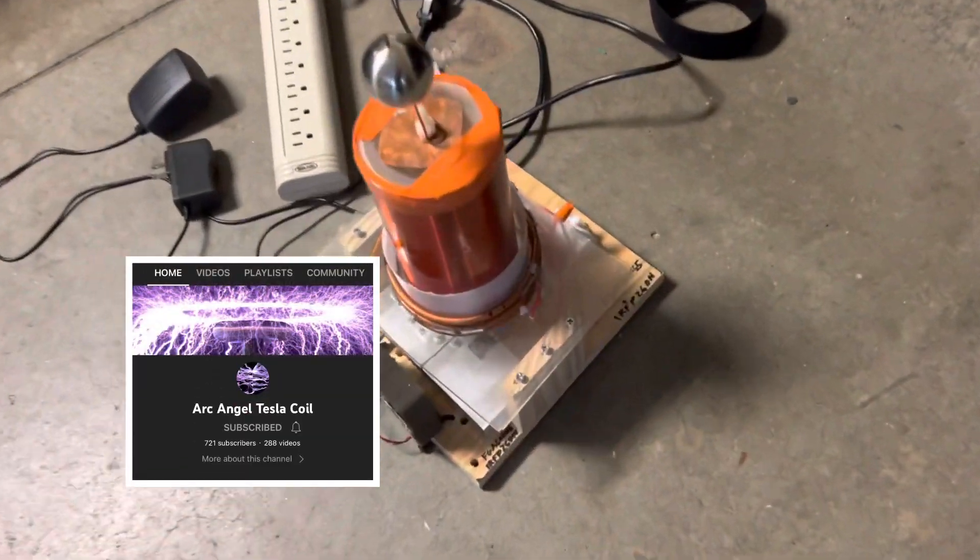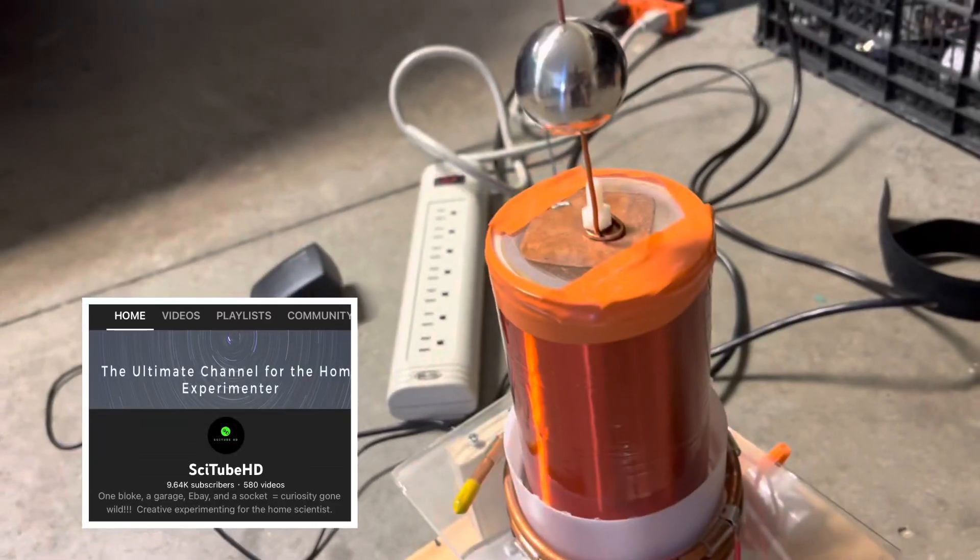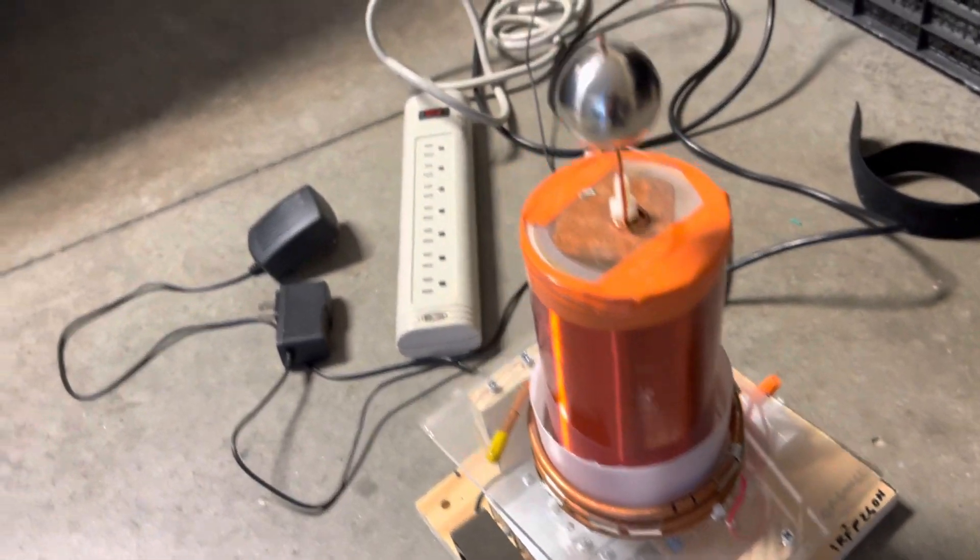Welcome back to my channel. I have a ZVS Tesla coil here which I've shown in previous videos, which basically uses a ZVS driver. I've already shown how this can run off of rectified mains, and I'll demonstrate that again for you today.